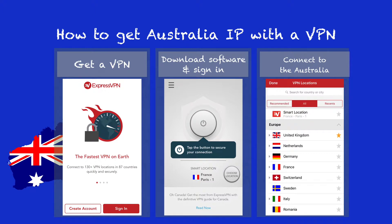How to get a Virtual Private Network and change your IP to another location? Step 1: Get a good VPN software like ExpressVPN. Step 2: Download and set up the software on your device. Step 3: Log in and search for your preferred server location and press to connect.